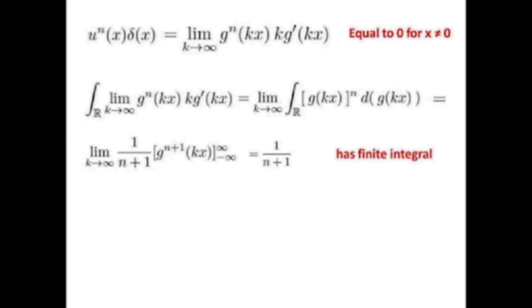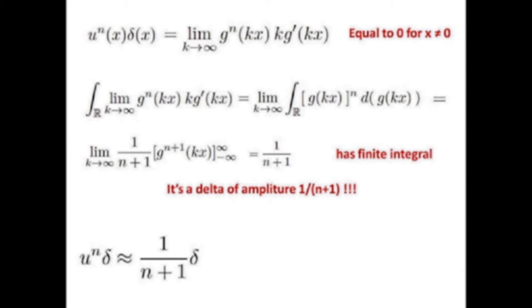We have a distribution which is 0 for x ≠ 0 and has finite integral, so we can say it is a delta function of amplitude 1/(n+1). This means that u^n times delta can be associated to a delta of amplitude 1/(n+1) according to the association criteria defined before.